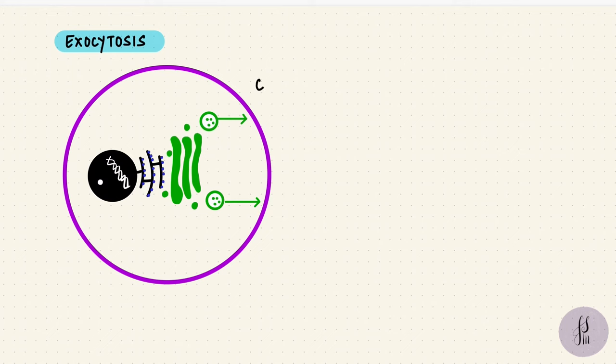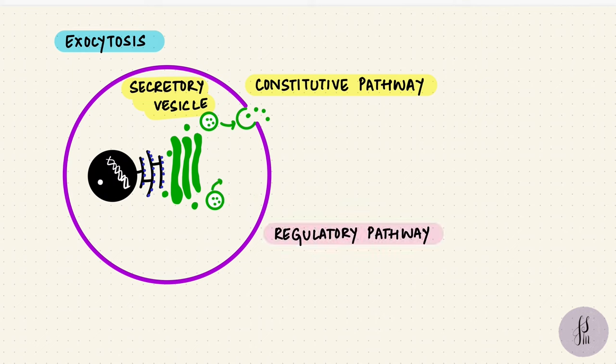There are different pathways for that, like there's the constitutive pathway, where when it's synthesized, the content gets released. There's no storage. These are called secretory vesicles. The second type is regulated, where the content can be stored, such that when there is a signal, it can get released into the extracellular space.